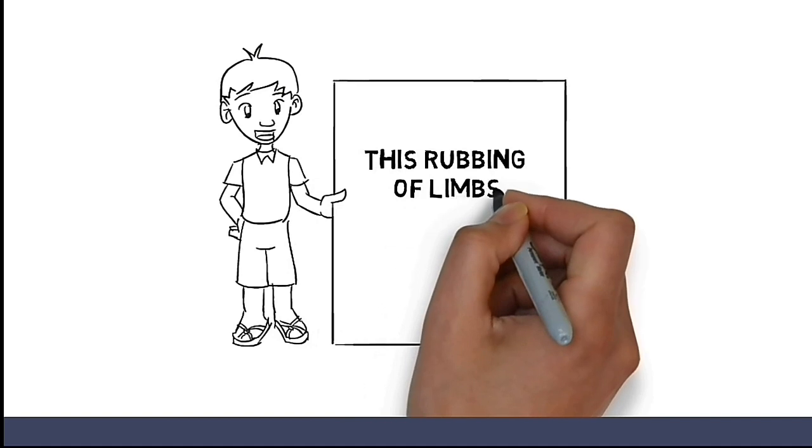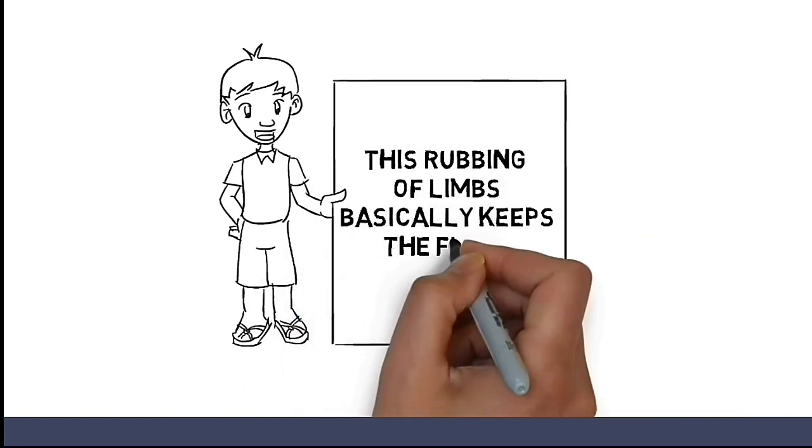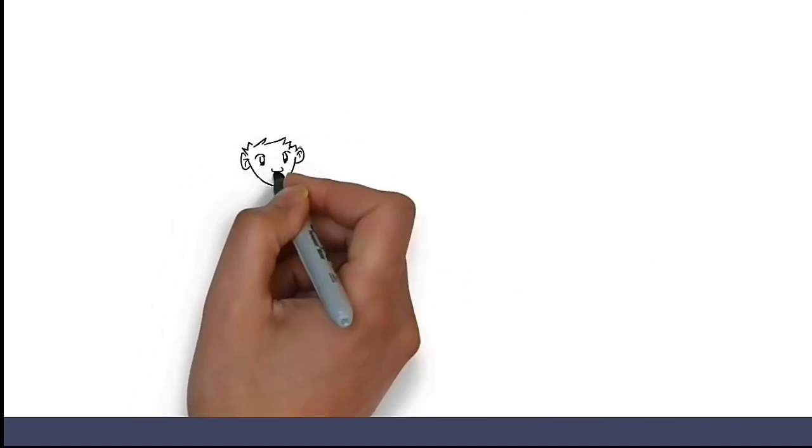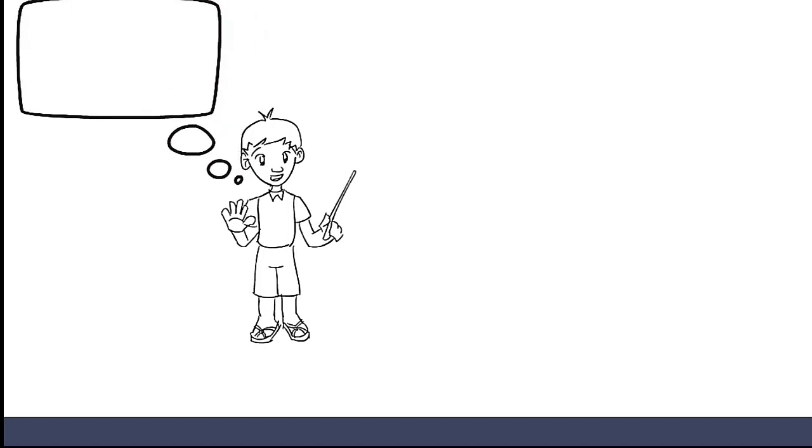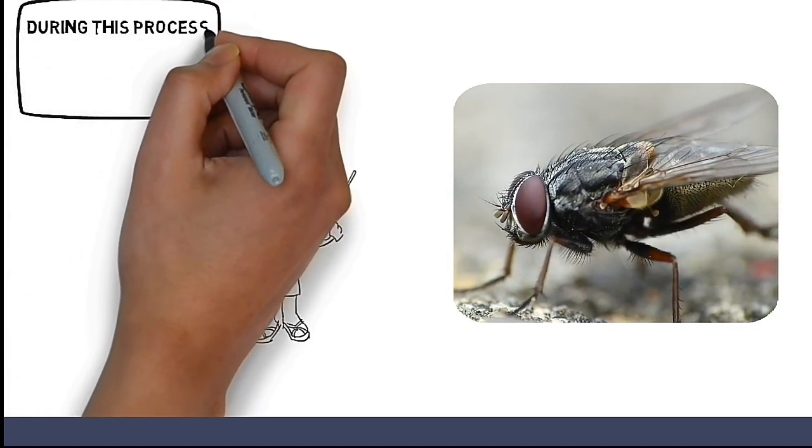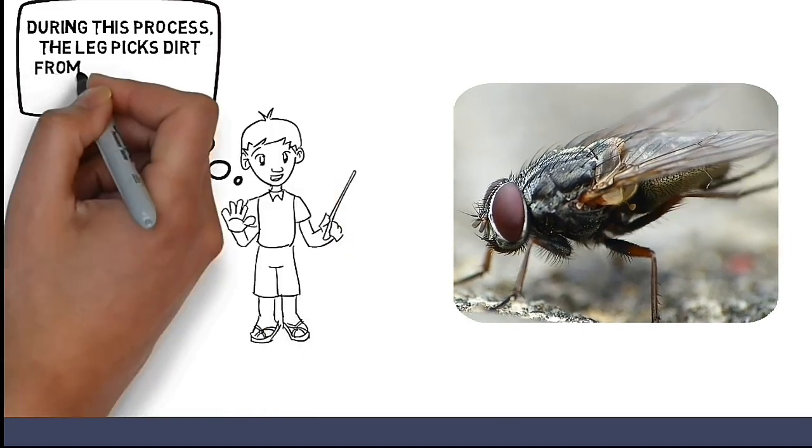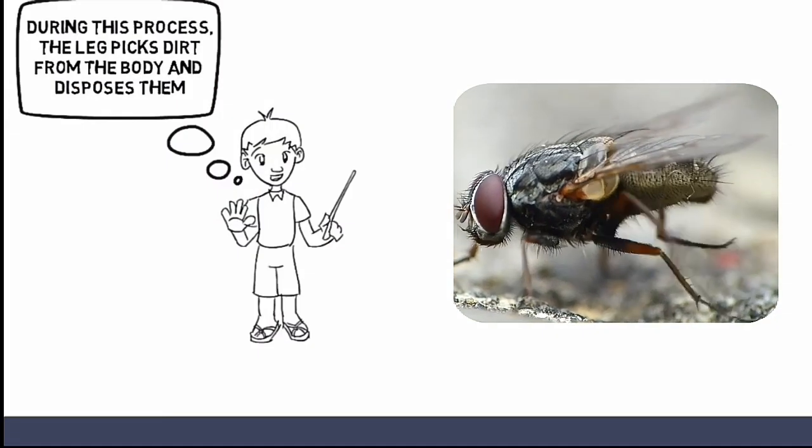This ritual rubbing of limbs basically keeps the flies clean. During this process, the leg of the fly picks dirt from the body and disposes them into its immediate environment.